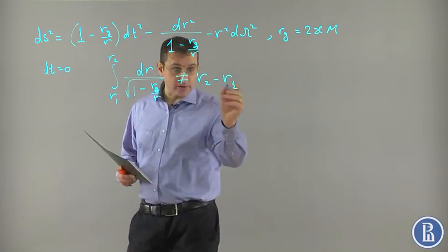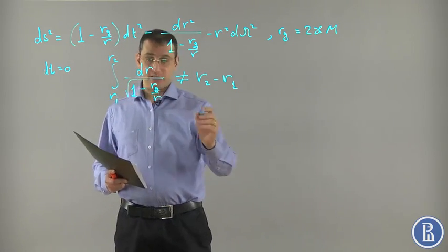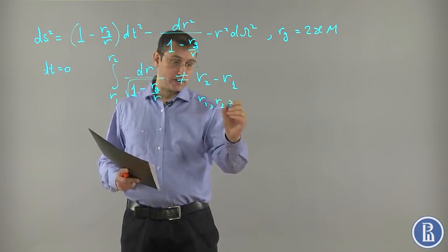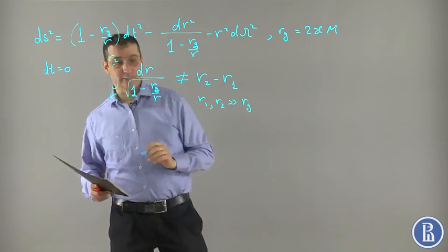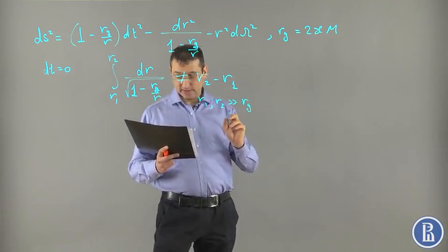It's only approximately equal to this value if we are very far. If R1 and R2 are much greater than Rg, then there is an approximate relation between these two quantities. So they are not equal. This is important.